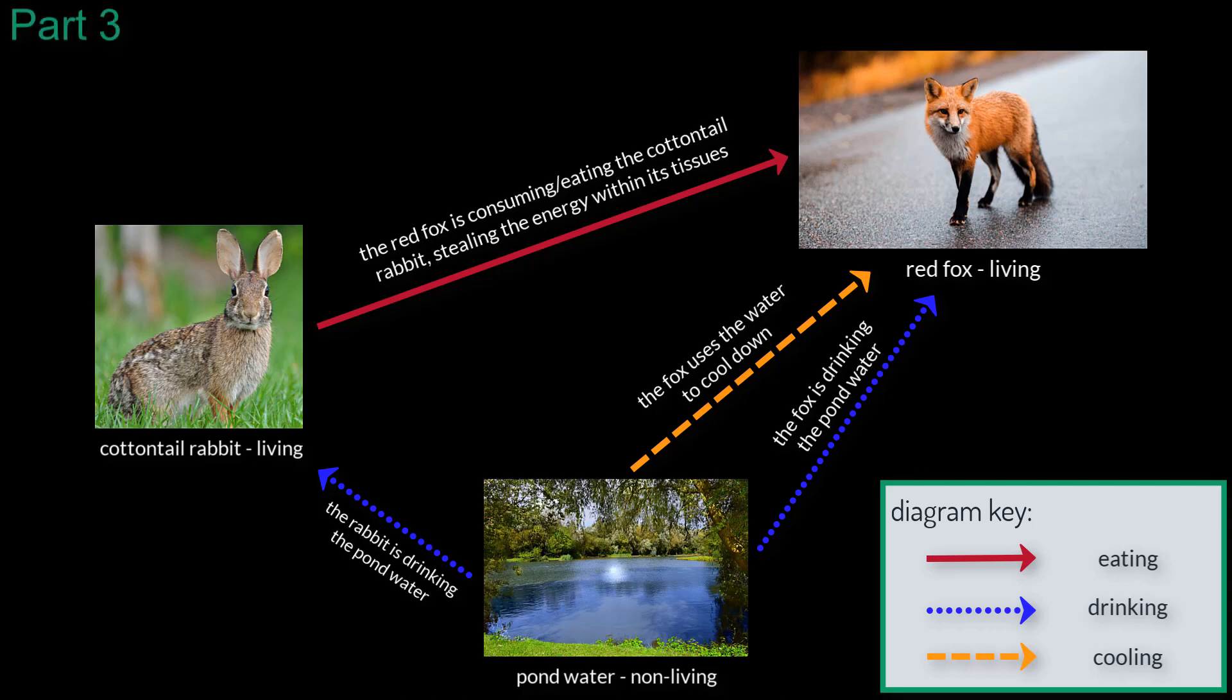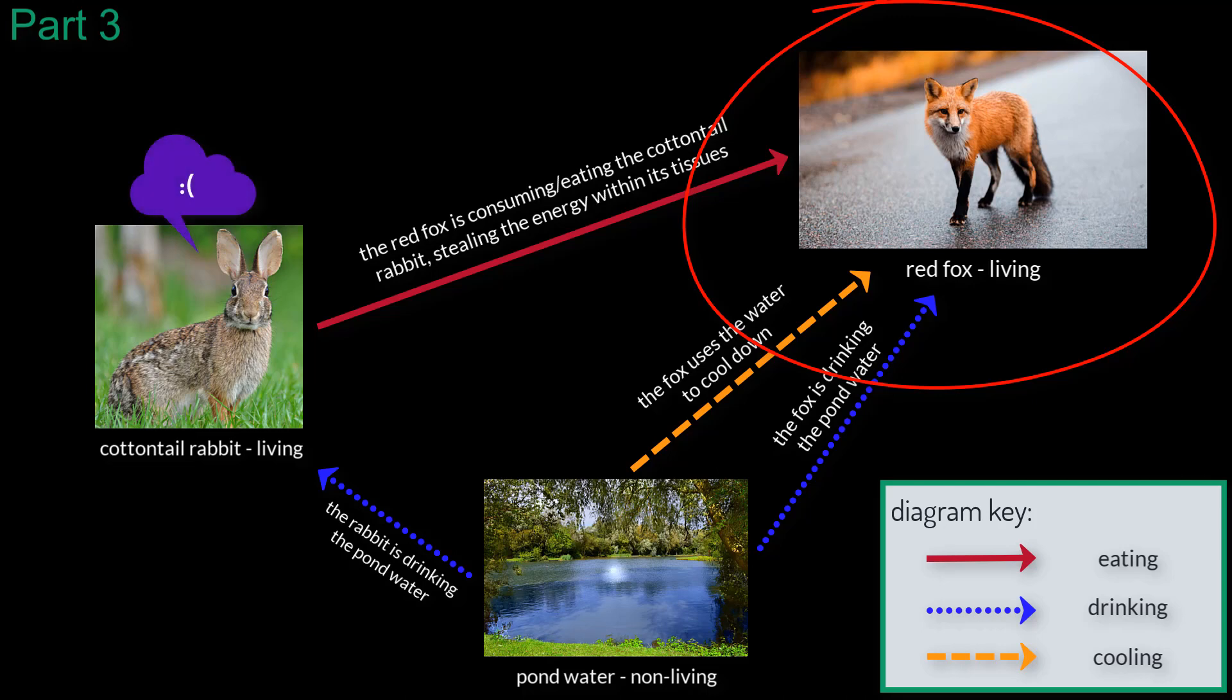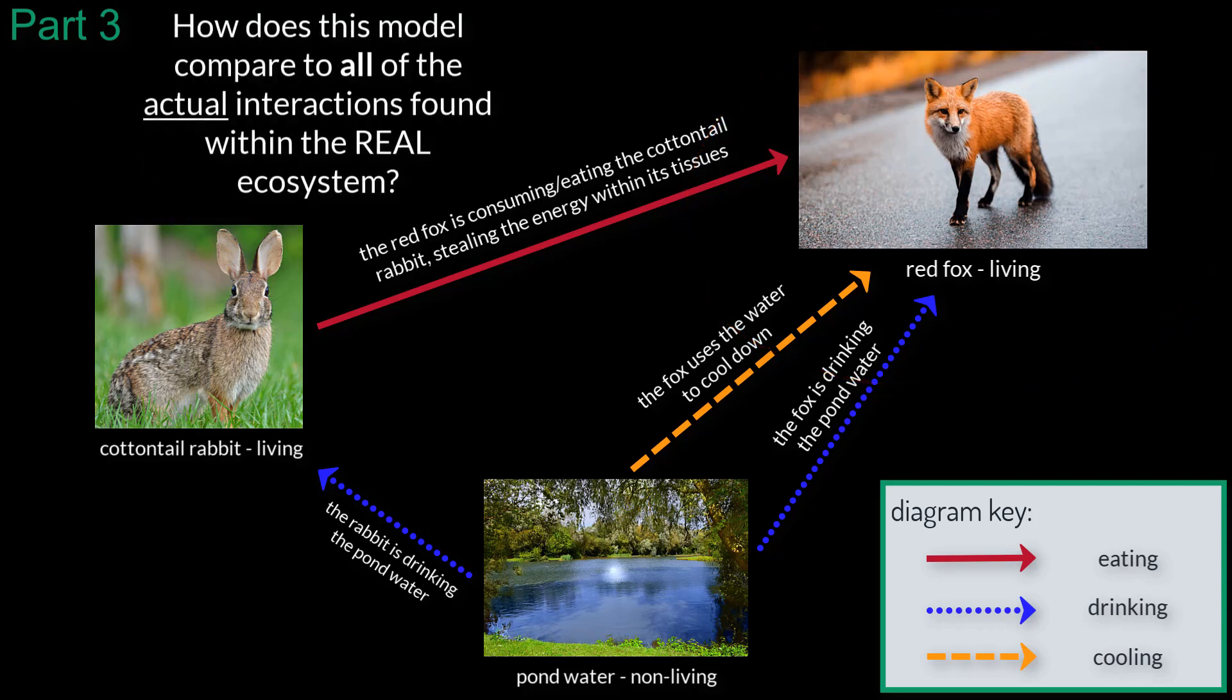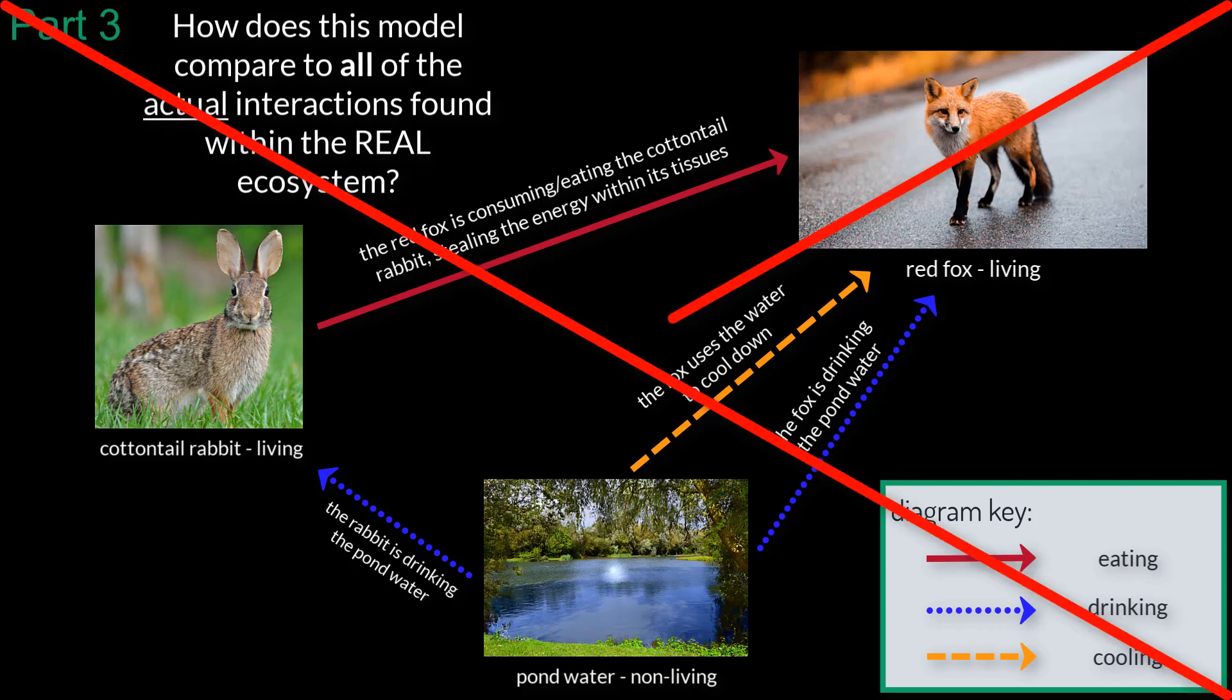We can now observe that in this model the fox is gaining a lot from these interactions, while the rabbit is only getting some drinking water. At this point you should be asking yourself, how accurate is this model and how does it stand up to the reality of the ecosystem? And the answer is, not very accurate.